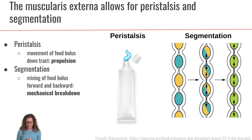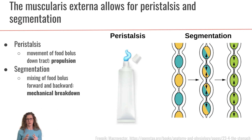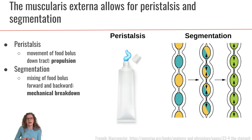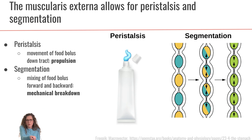Let's talk about the important role that the muscularis externa is playing. Those muscle layers lining the entire gastrointestinal tract are going to be important for the process of peristalsis as well as segmentation. Peristalsis is the movement of the gastrointestinal tract that pushes the food bolus through the tube. You can think of it like pushing toothpaste out of a tube — squeezing above helps push the food bolus or toothpaste down and out towards the end of the tube.